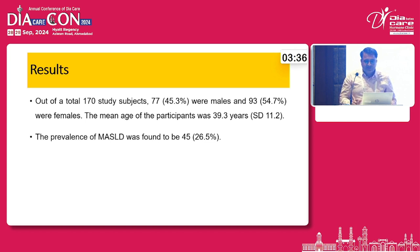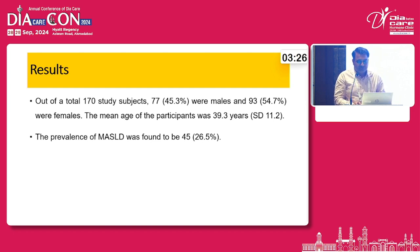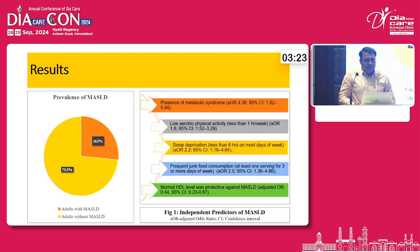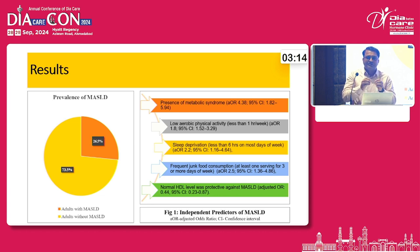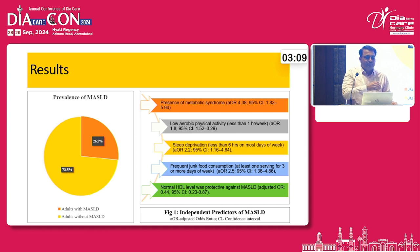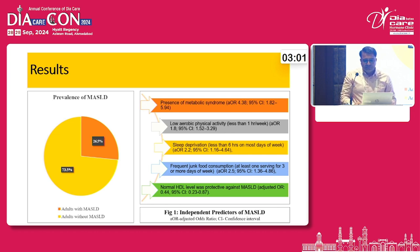Among the 170 subjects, 45% were males and 55% were females. Mean age was 39.3 years. The prevalence of MASLD was found to be 45 cases, that is 26.5%. These were adults who came for reasons other than liver disease; we assessed whether they had any cardiometabolic risk factors, made them undergo USG, and found 26.5% had MASLD.